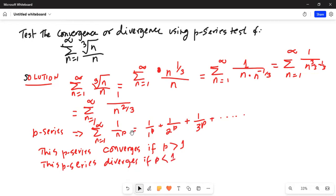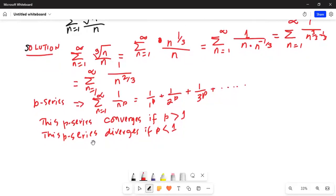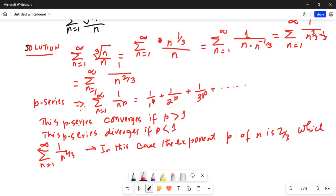In our case, we have a series sigma n equals 1 to infinity, 1 over n^(2/3). In this case, the exponent p of n is two-thirds, which is less than 1.